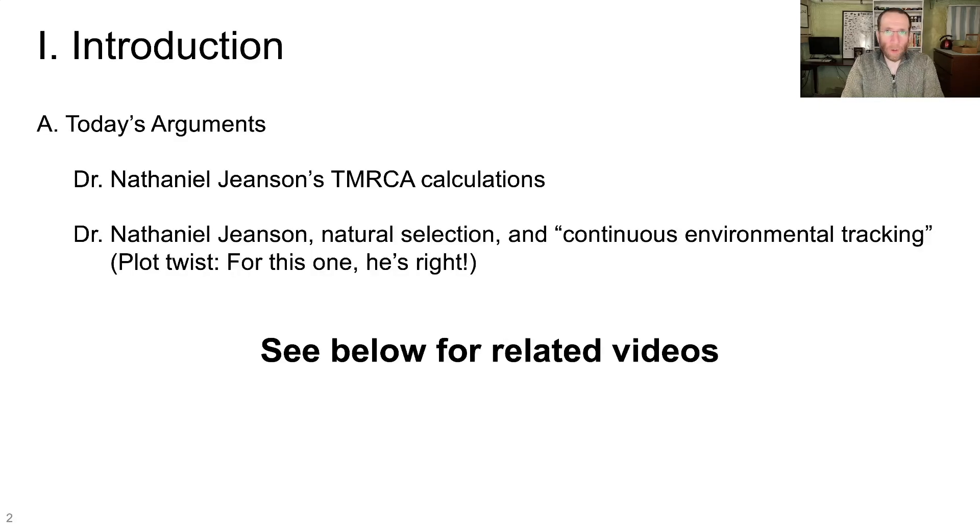The competing arguments that we are going to talk about today are Dr. Nathaniel Jeanssen's time-to-most-recent-ancestor calculations for mitochondrial Eve and Y-chromosome Adam, and also Dr. Nathaniel Jeanssen's take on natural selection and the concept of continuous environmental tracking. Plot twist for this series, for that second one, Jeanssen's actually correct. Now, I've talked about both of these things before, so see below for the videos on each of these topics.